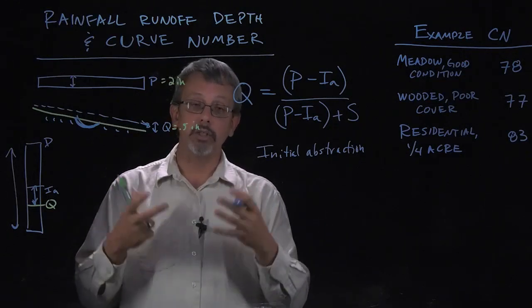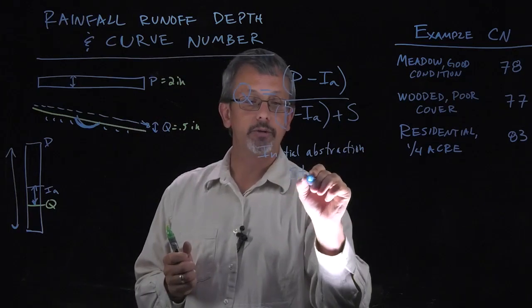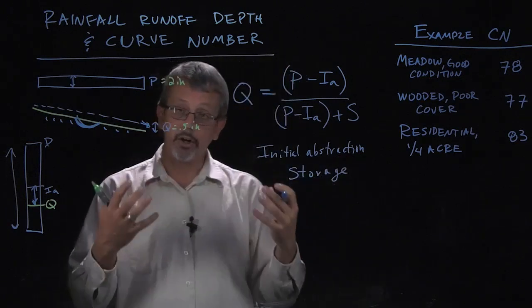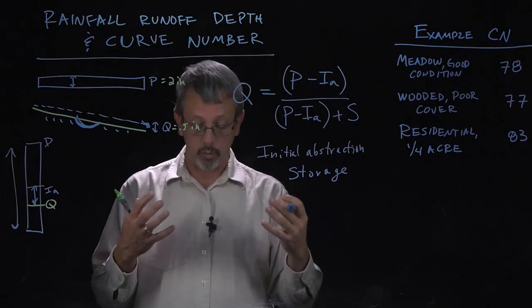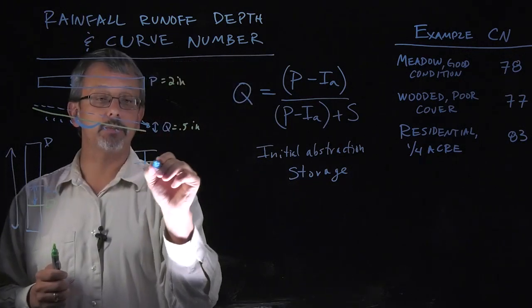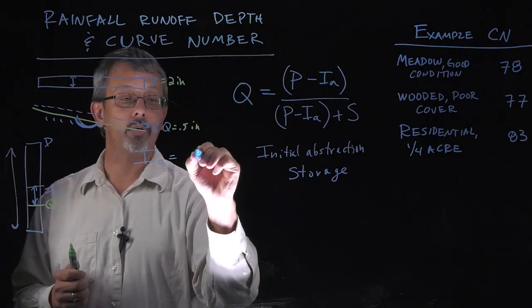Some of the water will also get stored. That S is for storage. One of the standard relationships between this initial abstraction and the storage is to assume that this initial abstraction is equal to 20 percent of the storage, 0.2 times the storage.